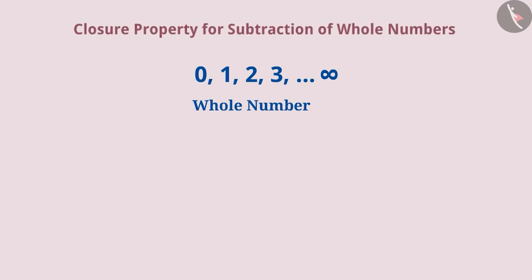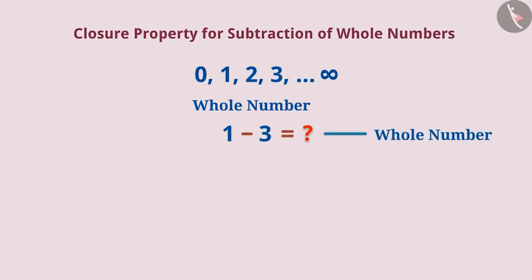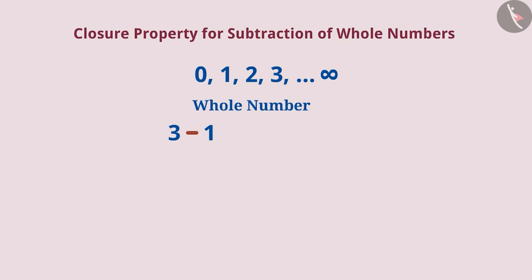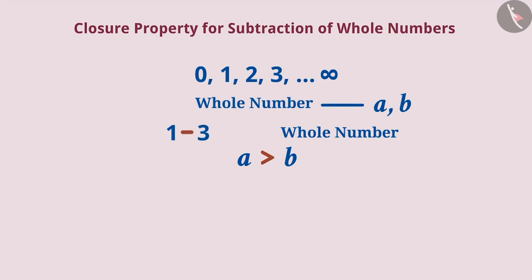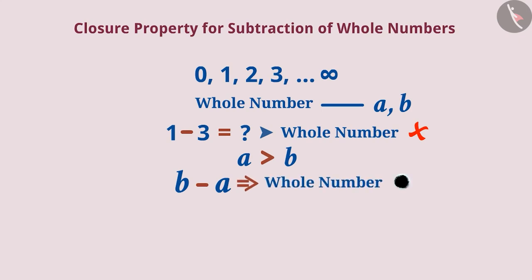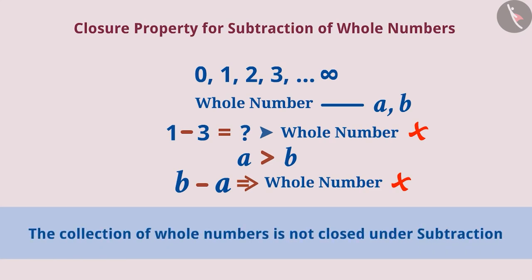Instead of Addition, if we subtract any two whole numbers, will the result be a whole number? If we subtract a smaller whole number from a larger whole number, for example 1 from 3, then we get a whole number 2. Therefore, if A is larger than B, then A minus B will be a whole number. But if we subtract a larger whole number 3 from a smaller whole number 1, the same is not possible. Therefore, if A is larger than B, then B minus A cannot be a whole number. That is, the collection of whole numbers is not closed under subtraction.